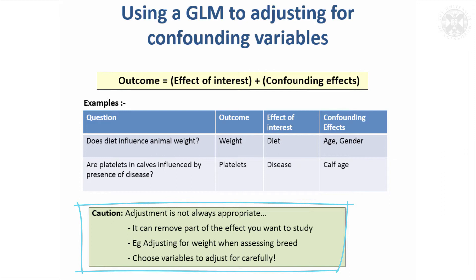For example, if you were assessing breed of animal and you adjusted for weight, then you would lose some of the overall thing of interest. You might be interested in the fact that weight differs between the breeds, and that's part of why something differs. So you might not always want to do it — you want to choose what you're going to adjust for carefully.